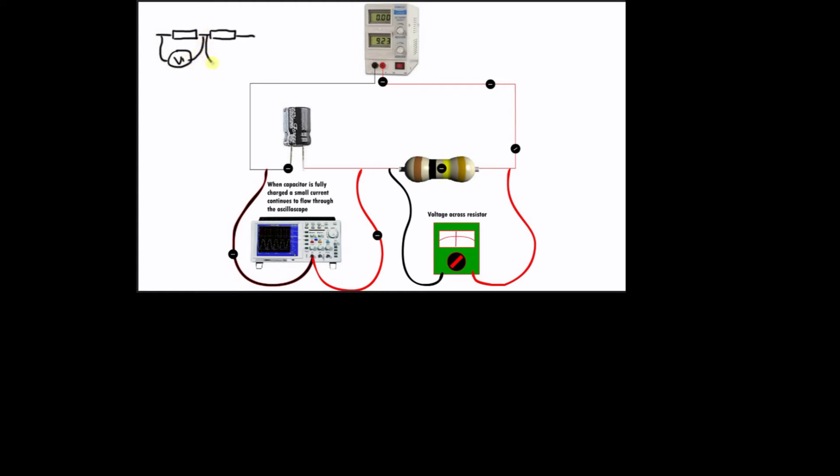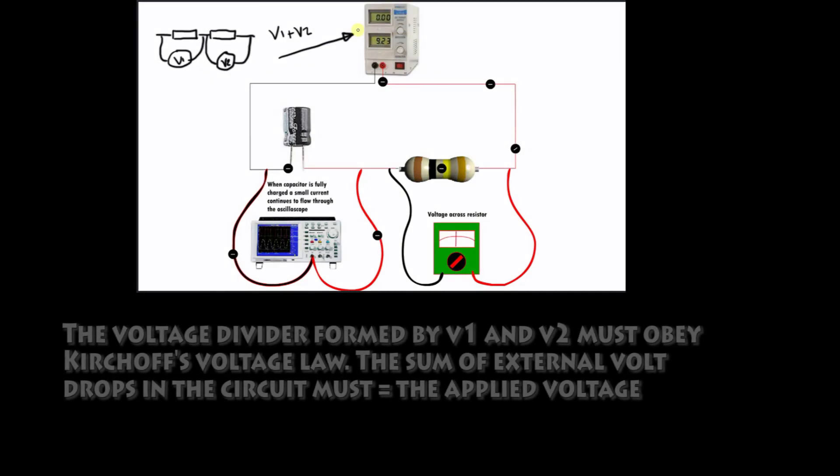The voltage dropped across the oscilloscope, V1, is dependent upon the value of the resistance in the circuit. But both V1 and V2 always equal the supply voltage.